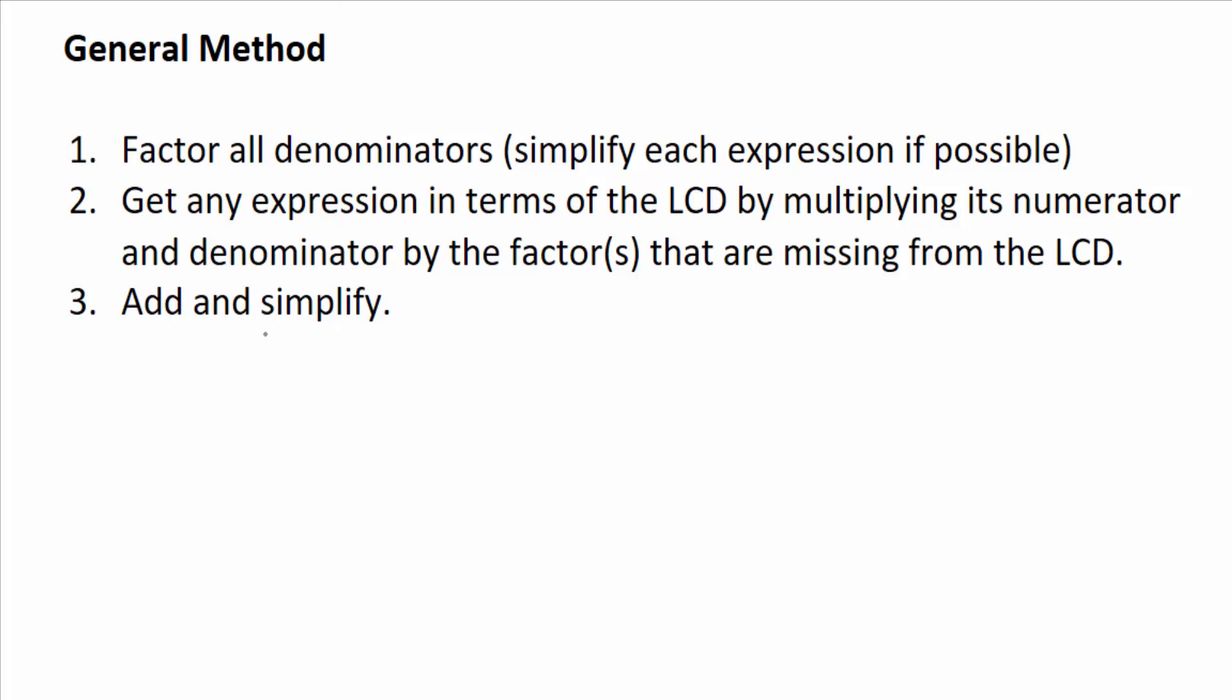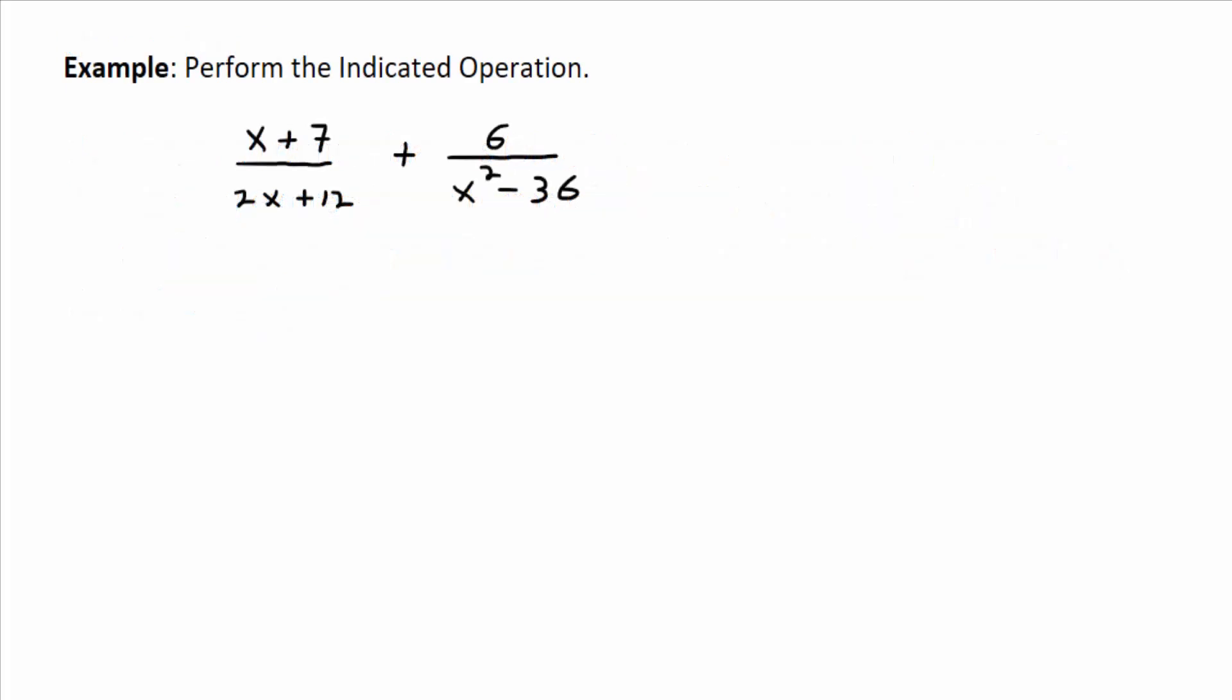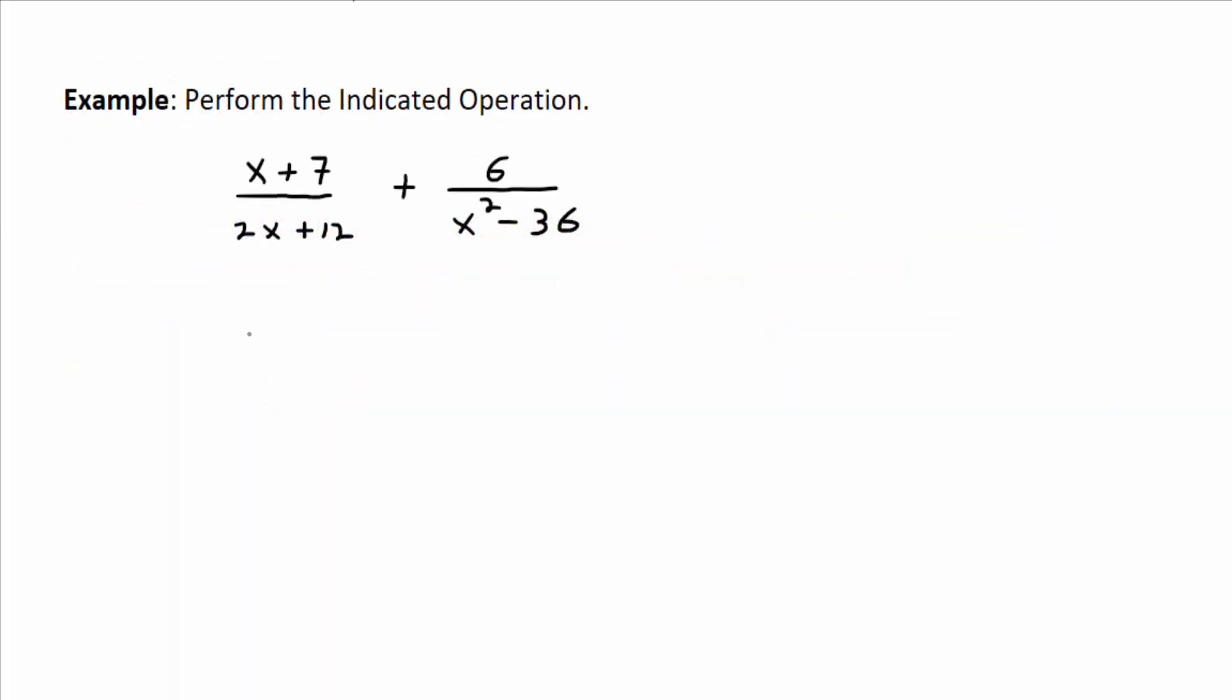Perform the indicated operation: we have x plus 7 divided by 2x plus 12, plus 6 divided by x squared minus 36. Let's look at our steps. What do we have to do first? We're going to factor. So in the first term, x plus 7, what could you do with this first denominator? How could you factor it?